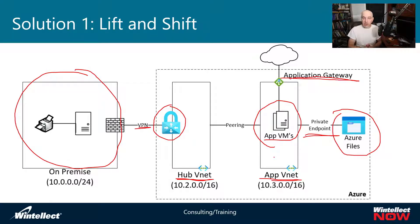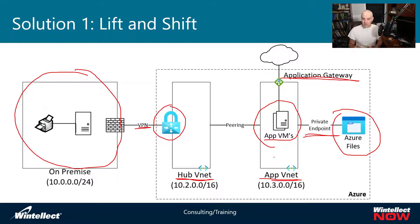This particular application has built-in access control — all authentication for the application is built right into the application; it's not using any third-party identity. So I didn't have to do any kind of syncing between Azure and my on-premise identity stores like Azure AD. I basically just lift and shift it into Azure. I still need Azure identity for managing my RBAC controls on Azure.